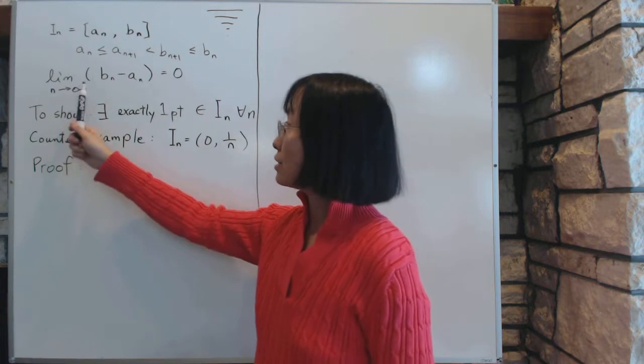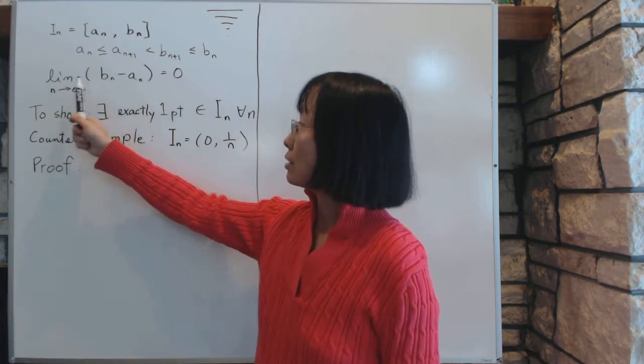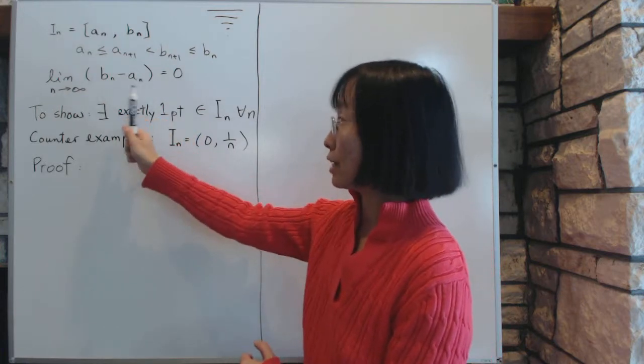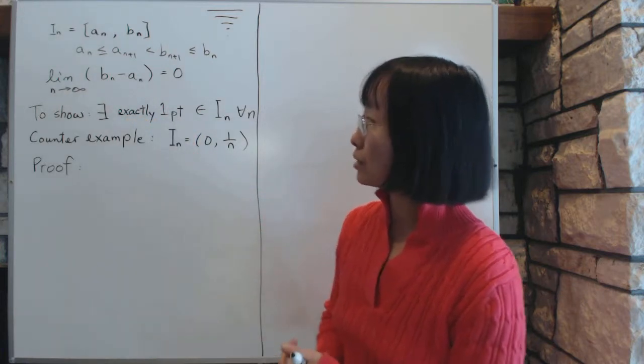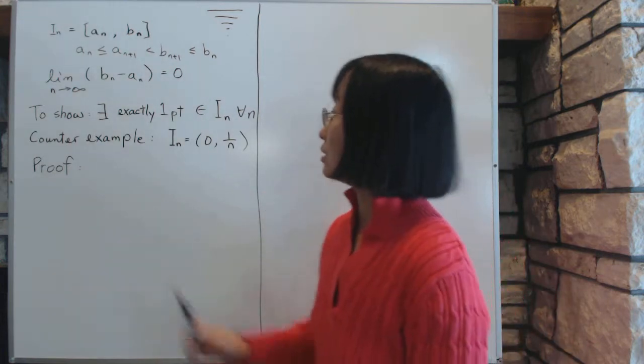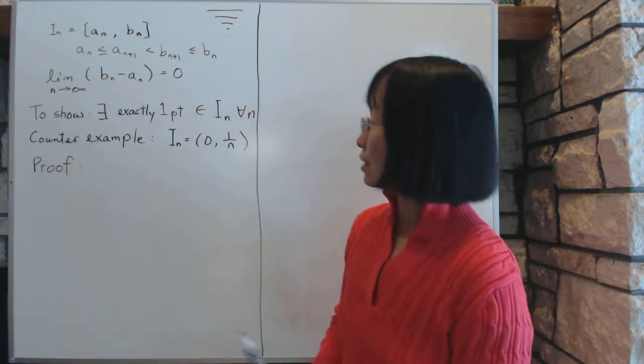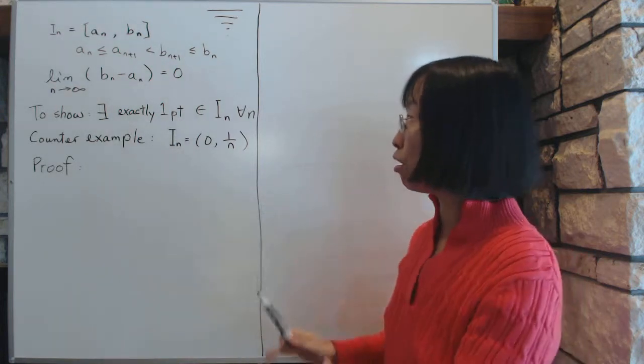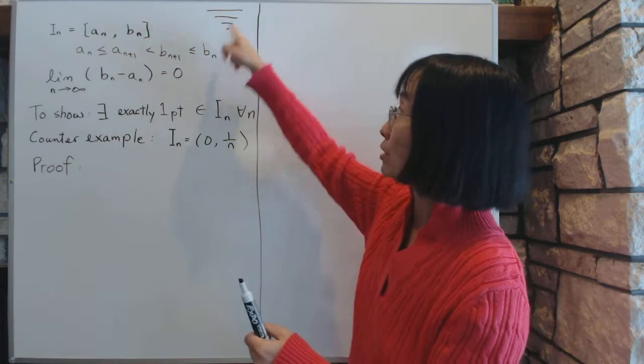And the third condition is that the limit of the length of the intervals, which is b_n minus a_n, is zero. So as n approaches infinity, the intervals get smaller and smaller. Now under those conditions, we're trying to prove that there exists exactly one point that is common to all I_n's. There's one point that they all have.